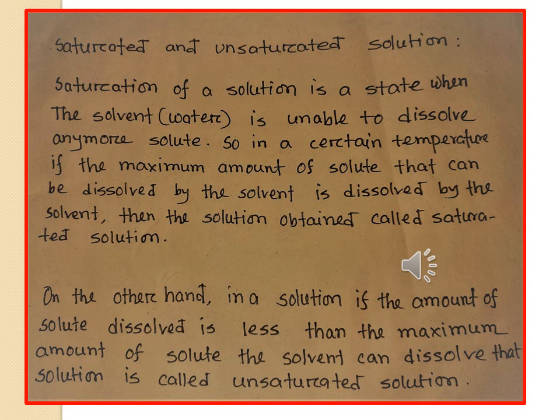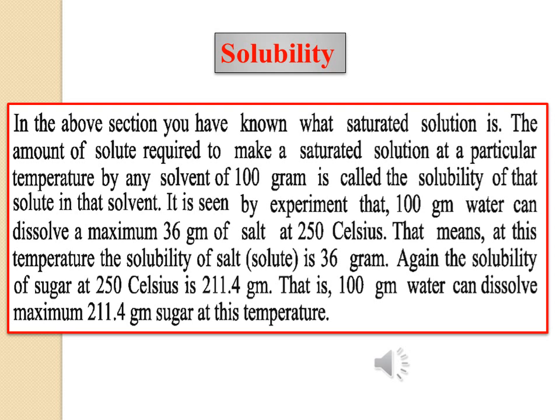On the other hand, in an unsaturated solution the amount of solute dissolved is less than the maximum amount that the solvent can dissolve. If the amount of solute present in any solution is less than the maximum amount that can be dissolved by the solvent, then that solution is called an unsaturated solution.